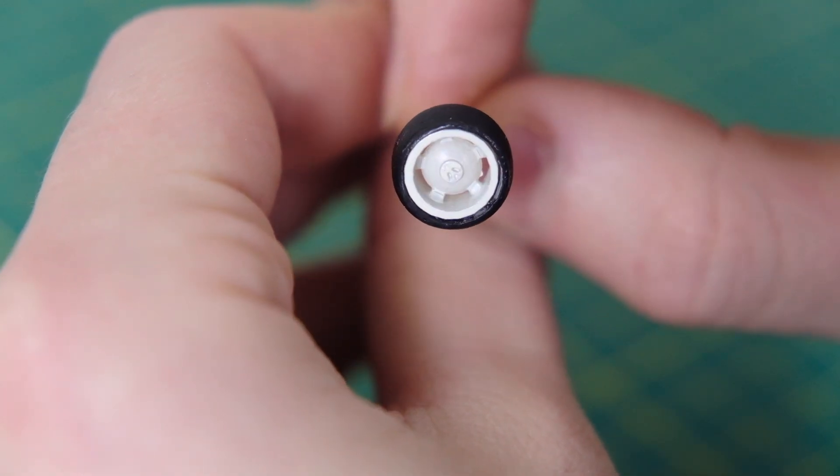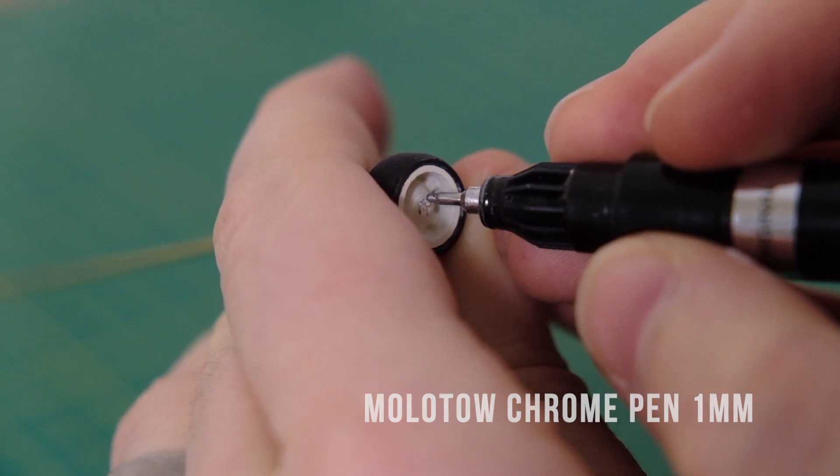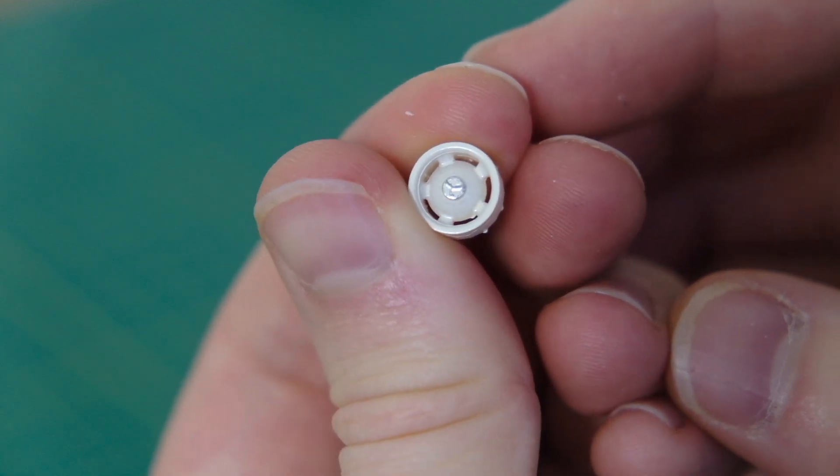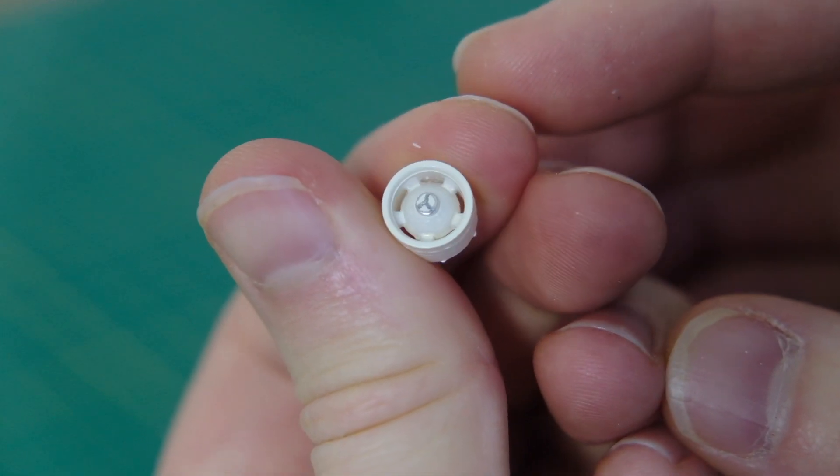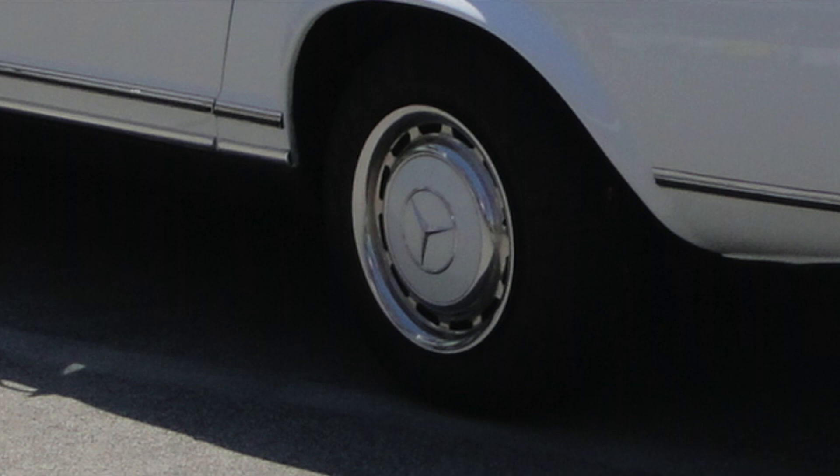They are actually VW wheels with the VW badge featuring in the center. So I used my chrome pen to draw the three-pointed star over Volkswagen's emblem. I thought these would look pretty authentic should my original Siku wheels fail me. What do you think?